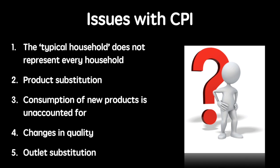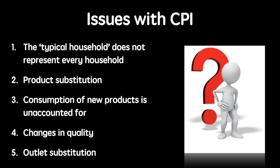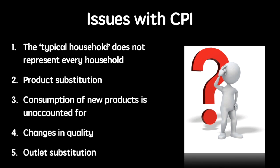Fifth, outlet substitution. As the price of goods and services rise, people may change where they buy these items. So whereas before they may have purchased certain goods from supermarkets, they may now be shopping at discount outlets, online stores, and food wholesalers.